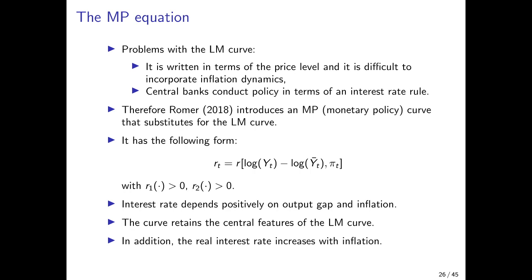What Romer does in his book is to introduce an MP curve — a monetary policy curve — that substitutes for the LM curve. It has the form that the real interest rate is a function of the output gap (actual output minus potential output) and the inflation rate, with the derivative of R with respect to both arguments being positive. So if the output gap increases or inflation rises, the central bank reacts by raising interest rates.